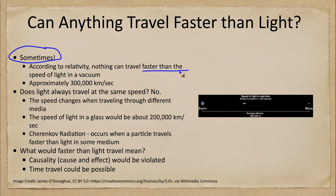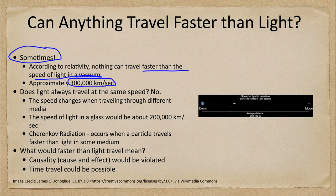Relativity says that nothing can travel faster than the speed of light in a vacuum. The speed of light in a vacuum is about 300,000 kilometers per second. Nothing can exceed that speed — no particle, nothing with mass, no information is allowed to travel faster than that speed. That is what relativity says.